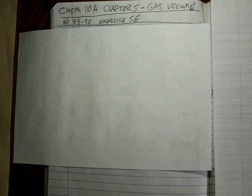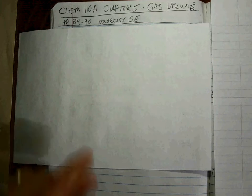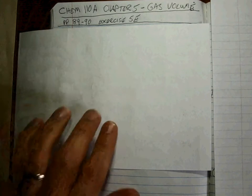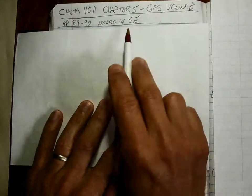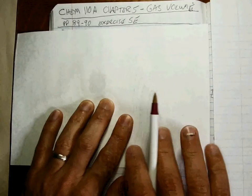Chapter 5, Gas Volume, pages 89 and 90, exercise 5e.